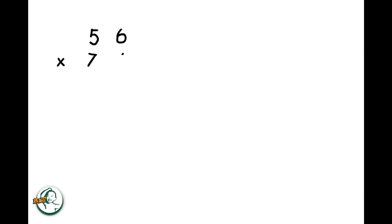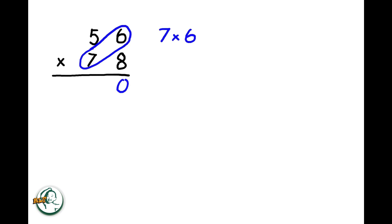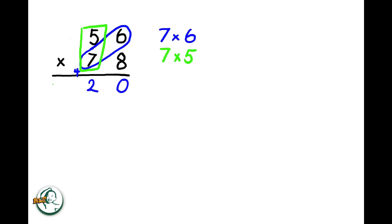Into another example, 56 times 78. Firstly, we start by writing down a zero. So, we multiply 7 by 6, giving us 42. We write down the 2 and carry over the 4. Next, we multiply 7 by 5, resulting in 35. Adding the carried over 4 to 35, we get 39.